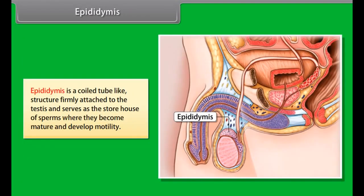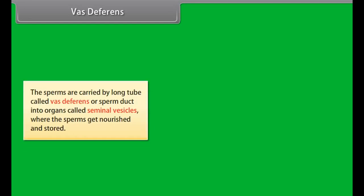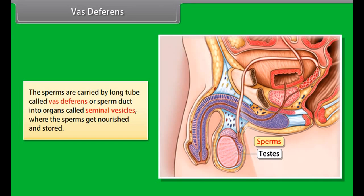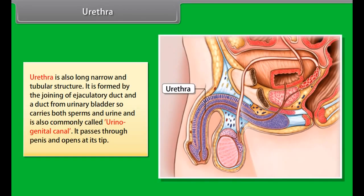Testes have about 900 narrow and convoluted seminiferous tubules with sperm-forming germ cells. Germ cells form sperms by spermatogenesis. The epididymis is a coiled tube-like structure firmly attached to the testes and serves as the storehouse of sperms where they become mature and develop motility.